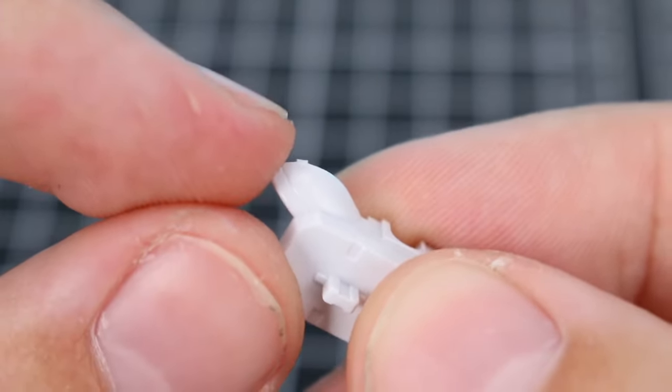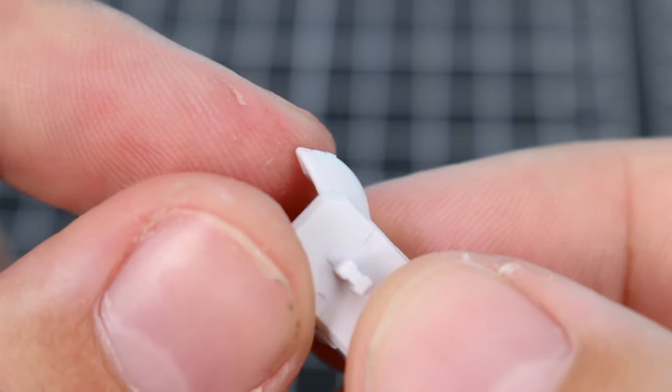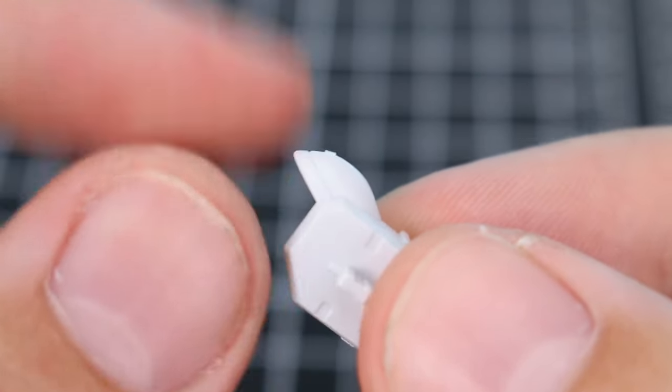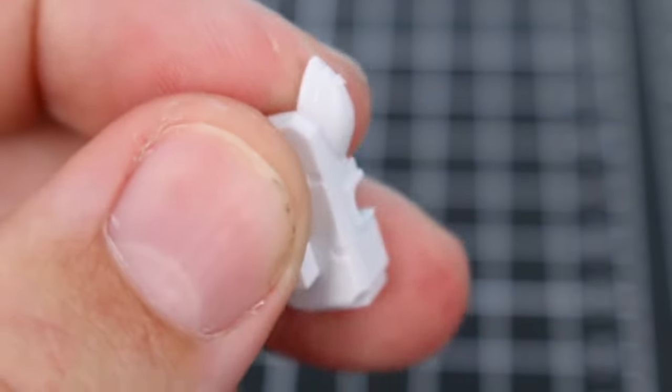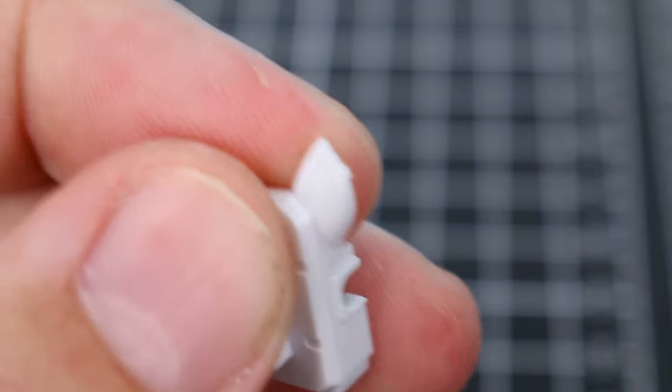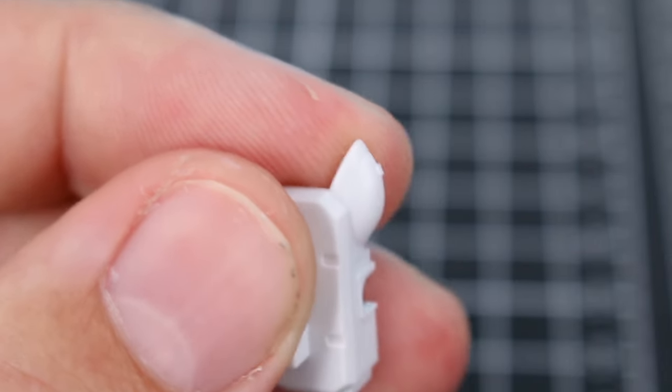However, if the nub in question happens to be on a curved surface like this, if you use a glass file or a hard type sanding stick, that is going to flatten the curve. You want to keep that curve intact, so using either sandpaper or a soft type sanding stick or sanding sponge would be recommended.